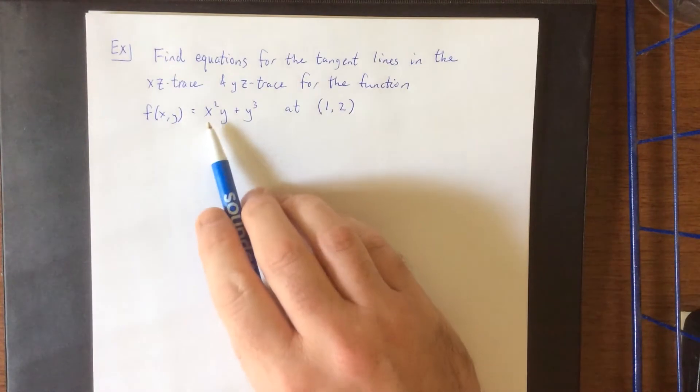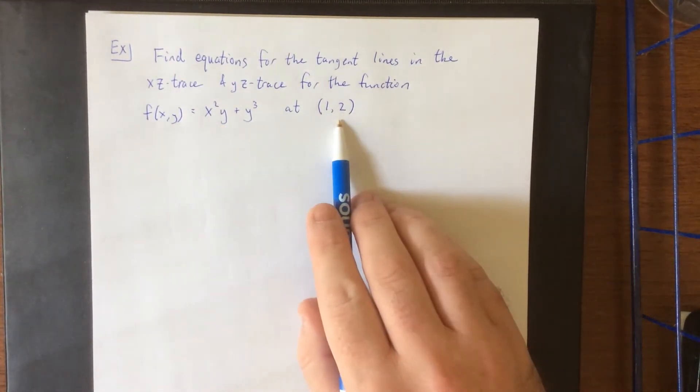That's f(x,y) equals x squared y plus y cubed at the point (1,2).